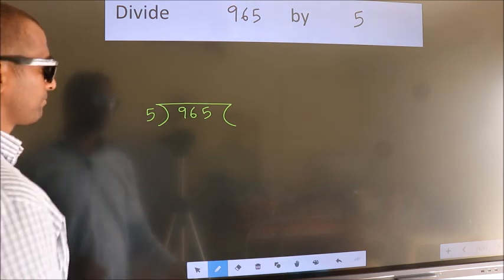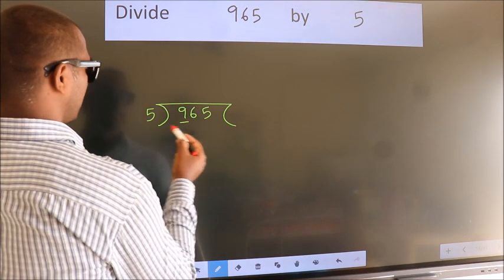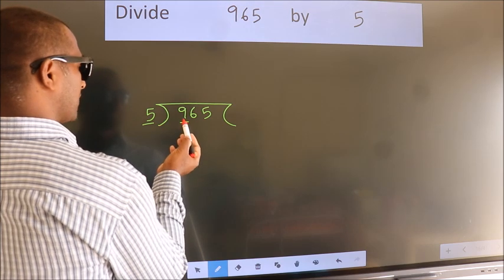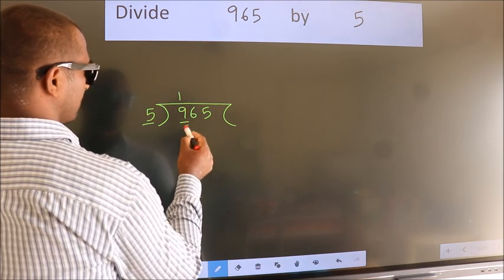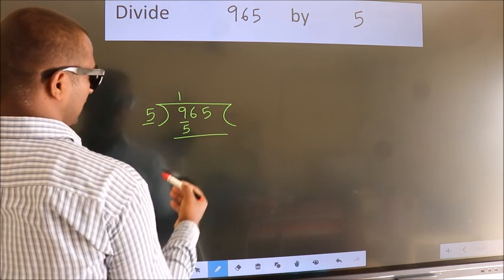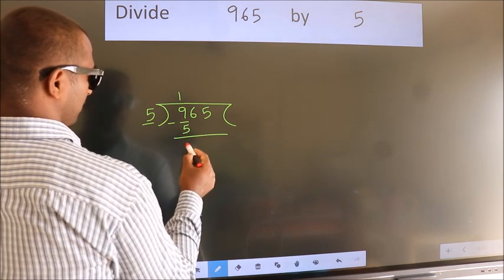Next, here we have 9, here 5. A number close to 9 in 5 table is 5 1s 5. Now we should subtract. We get 4.